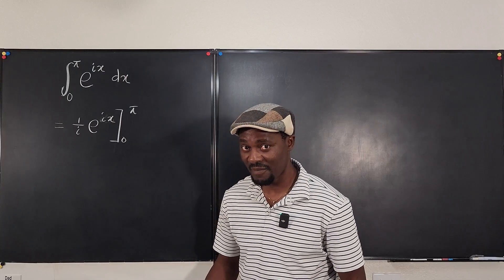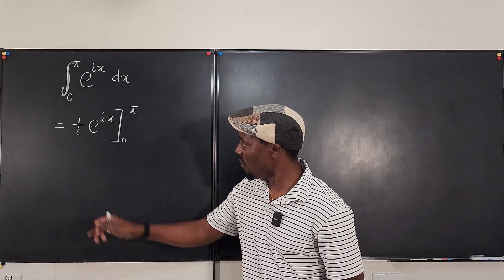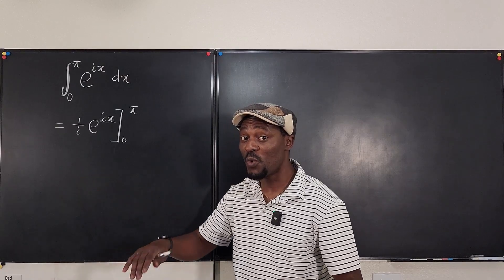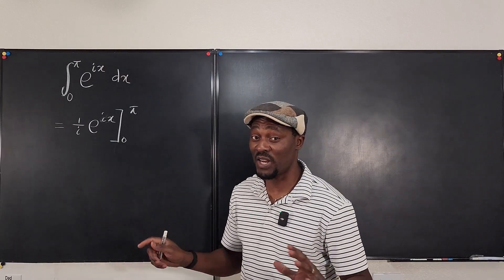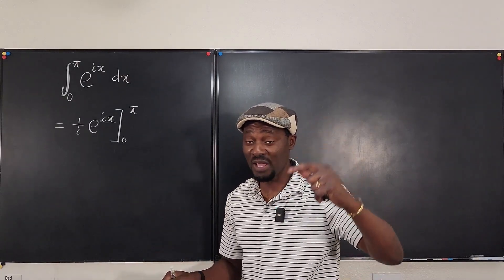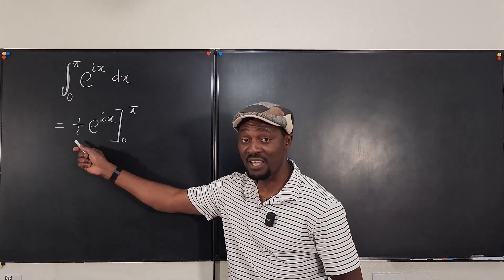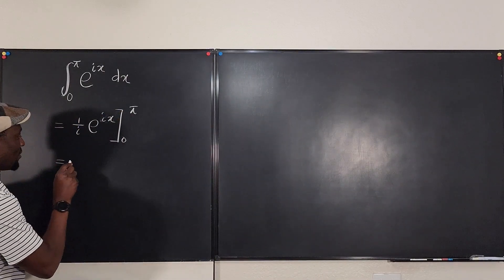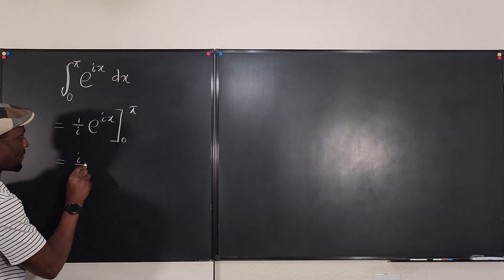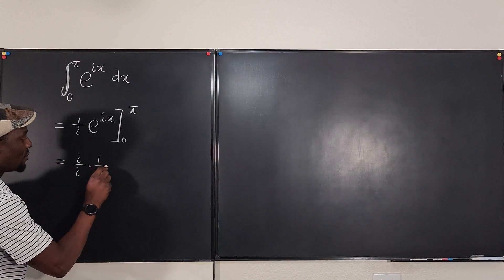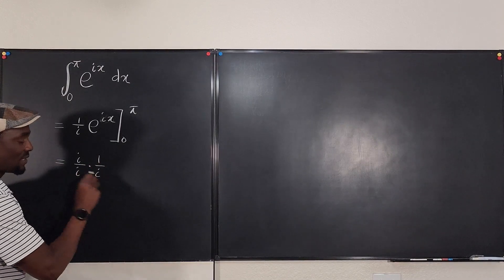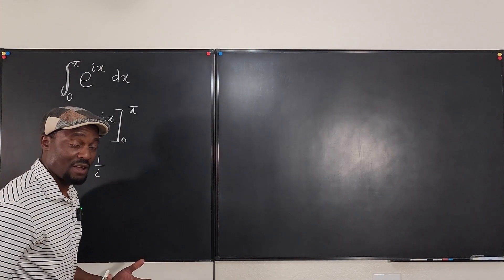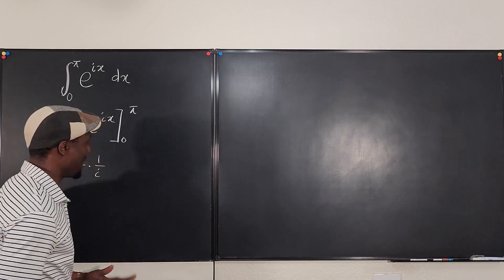However, we don't want i in the denominator. We use what we call rationalization: multiply the top and bottom by the same thing. So I multiply by i over i, giving us rationalization of imaginary fractions.